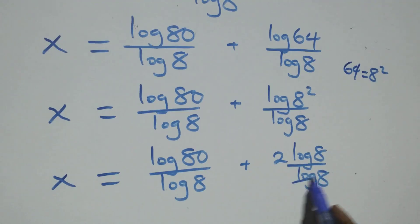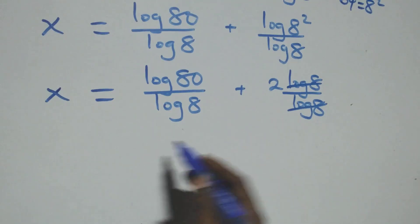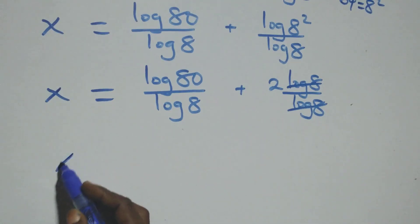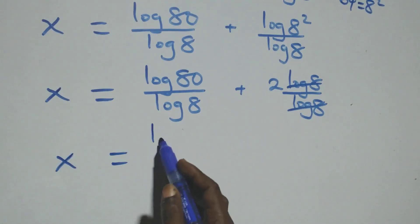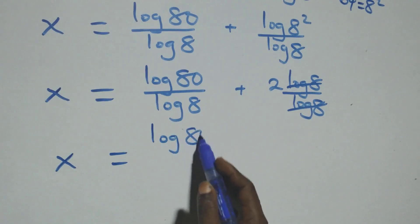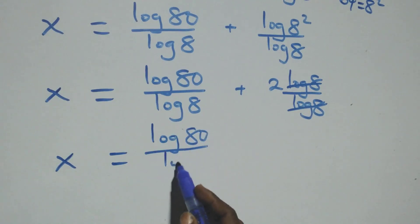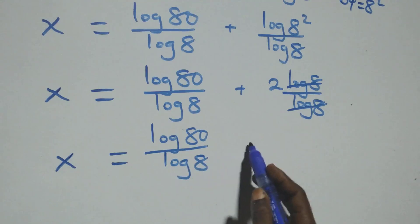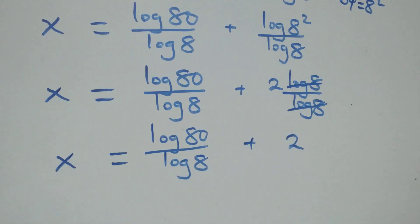Here log 8 cancels with log 8 in the second fraction, giving us 2. So x equals log 80 over log 8 plus 2.